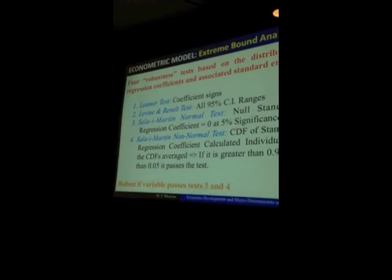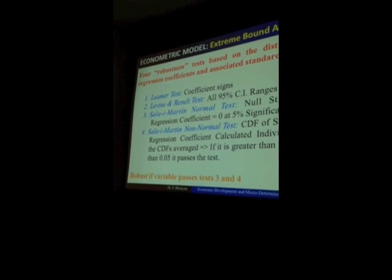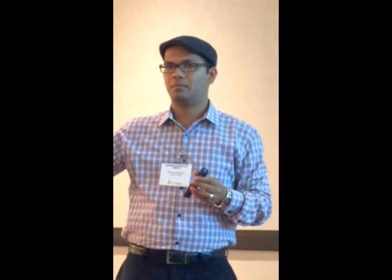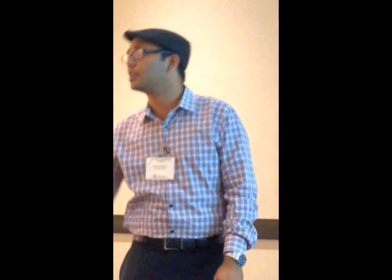This goes to how we test robustness. Once you run these millions of regressions, for each variable you have a whole distribution of coefficient estimates. For example, the value of friendship: that variable appeared in one regression, in a second regression, in a third and fourth regression. Every regression gives you a coefficient estimate and a standard error. So you have a distribution of these coefficient estimates, and you can use that to run a few tests. If you want to know more about it, we can definitely talk.